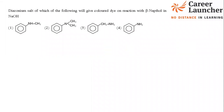Next: which diazonium salt gives a colored dye on reaction with beta-naphthol in NaOH? Aromatic amines and aromatic phenols form dyes with beta-naphthol at the para position. The options that are not primary aromatic amines or are tertiary amines or benzylamine (C6H5CH2NH2) will not form dyes. The answer is option 4. Moderate question from nitrogen compounds.